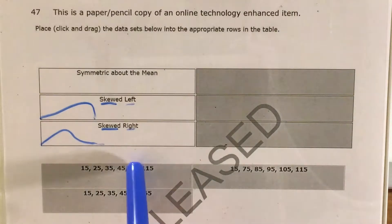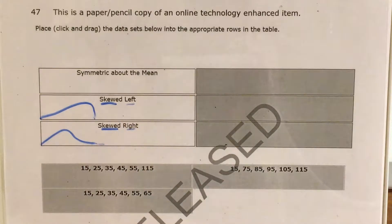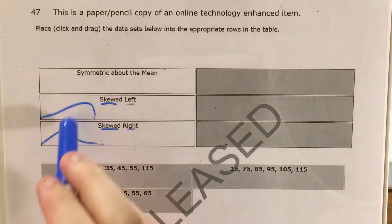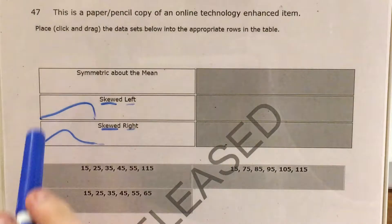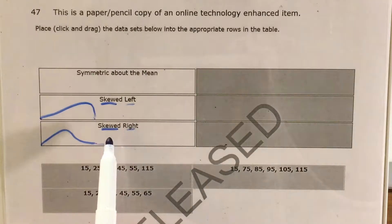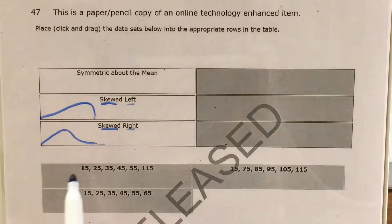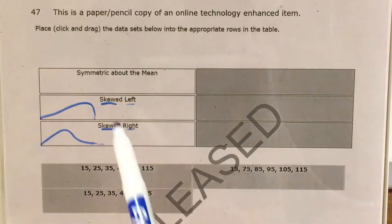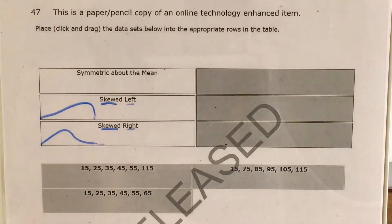I'll go over how to actually put these data sets in a calculator so that we can see what they look like, but I do want to start by talking about skewed, because I have drawn a quick example of a skewed left and skewed right distribution. Essentially, the memory trick I like to use is that if it's skewed left or skewed right, whichever one we're using to name the distribution, that side corresponding with its name is going to look like a skewer — something really sharp.